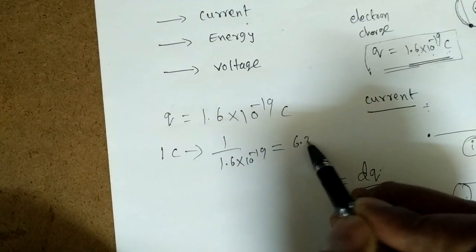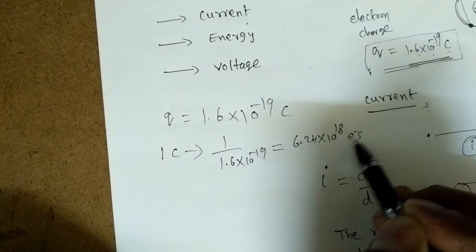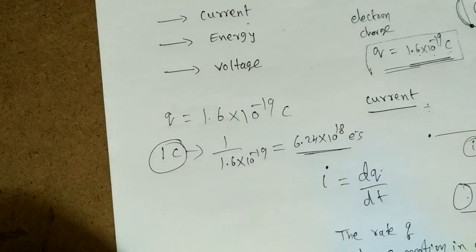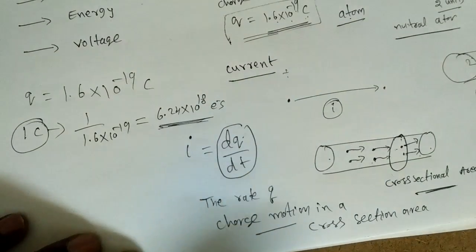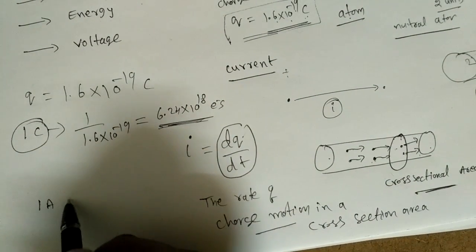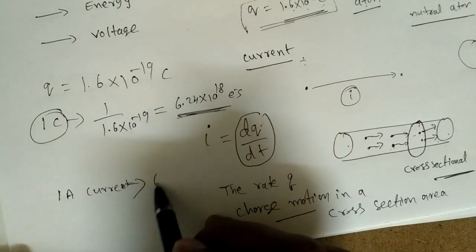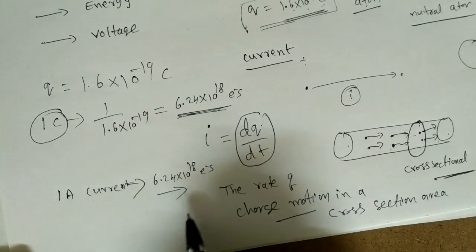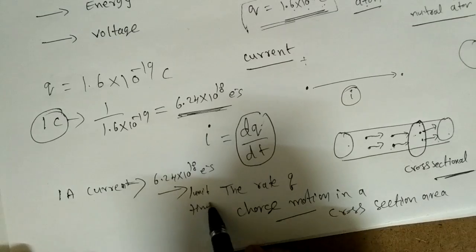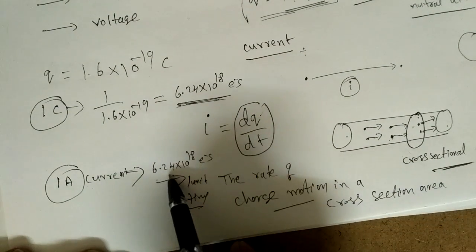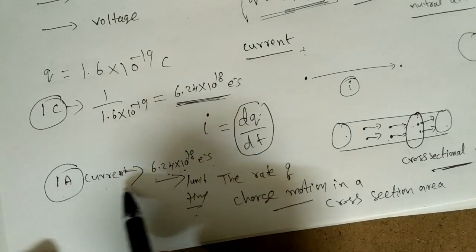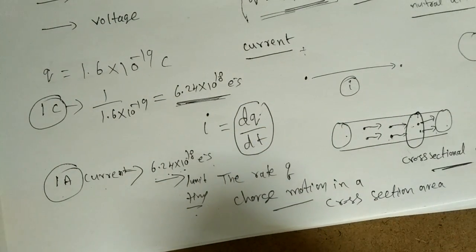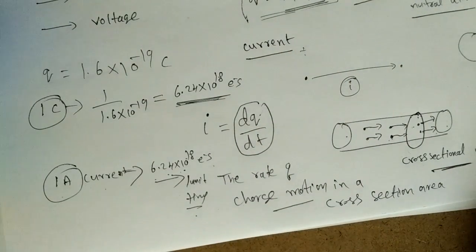That gives approximately 6.24 × 10¹⁸ electrons in one coulomb of charge. So to flow one ampere of current, 6.24 × 10¹⁸ electrons must move across a cross-sectional area per unit time. When that many electrons cross a cross-sectional area within one second, we say one ampere of current is flowing in that conductor.